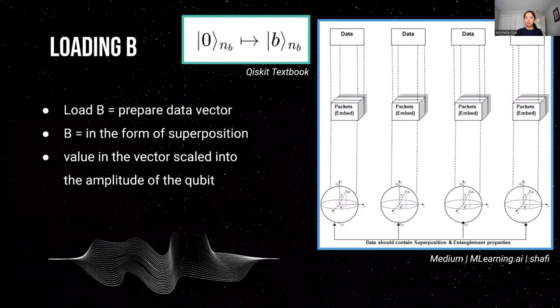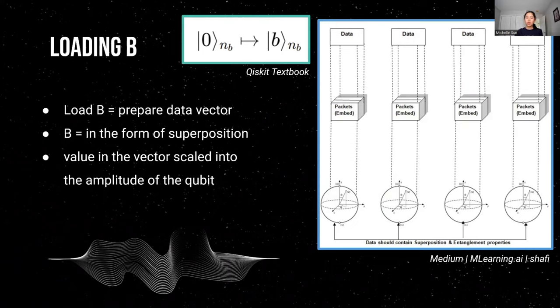The first step in the algorithm is to prepare the data vector B. Quantum state preparation is important because we can't directly work with classical data in quantum computing, so we need vector B to be scaled into the amplitude of the qubit.